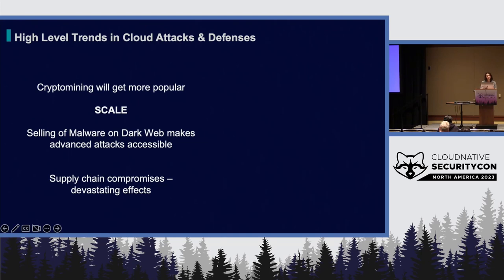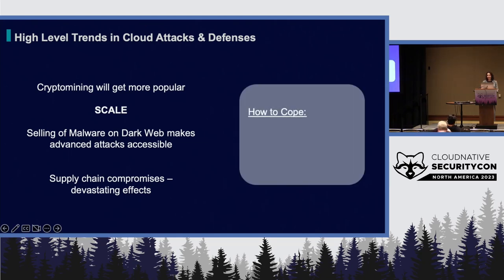Log4j went from announcement to being weaponized in less than a few hours — a turnaround time way faster than most vendors can provide a patch for. All of this to say: instead of being all doom and gloom, there are ways to cope. One really important way is having real-time visibility. The reason this is so important is because you can't always detect the compromise itself, but often you can detect the signs of a compromise in your environment. When attackers have compromised an environment, they're typically doing the same kinds of actions — so you should know what to look for and be notified about it in real time.